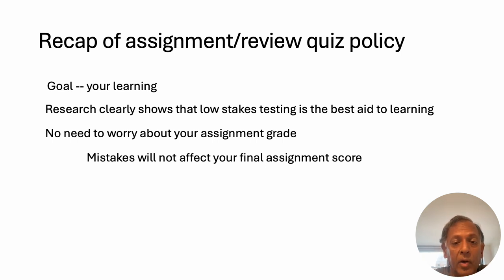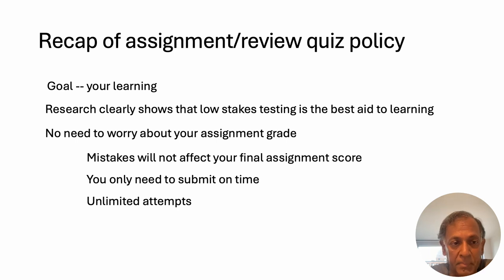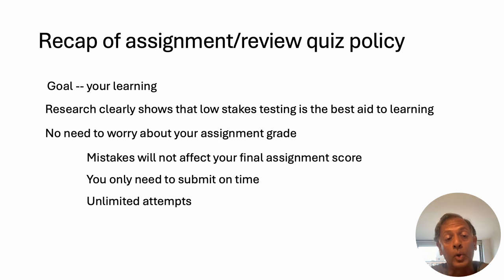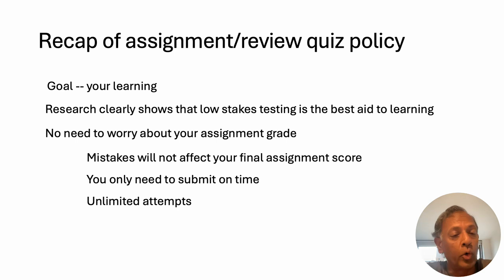Obviously I want you to submit correct answers so that you learn. Mistakes have no impact on your final assignment score — you only need to submit on time. Also, I'm trying to make sure that every single review quiz and assignment has an unlimited number of attempts. So you do it once, get a few questions wrong, look back and learn, then go back and make another attempt. If you want to see a hundred percent score, you can just keep doing attempts till you get everything right. The stakes in these review questions and assignments are very very low — as long as you submit everything you're going to get the full ten percent at the end of the semester.